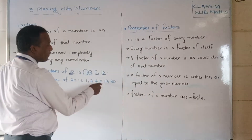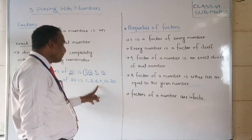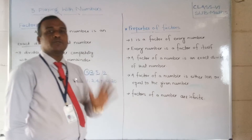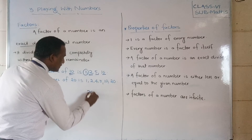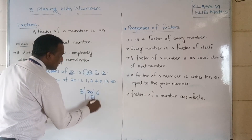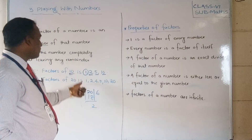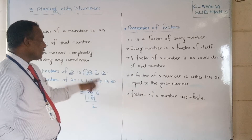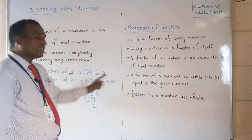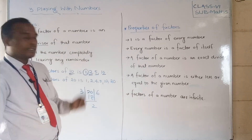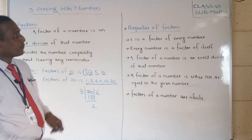Now, factors of 20 are 1, 2, 4, 5, 10, and 20. We check each: 3 is not a factor of 20 because 3 × 6 = 18, leaving a remainder of 2. But 5 × 4 = 20, 10 × 2 = 20, and 20 × 1 = 20 — all with remainder zero. So these are all factors of 20.